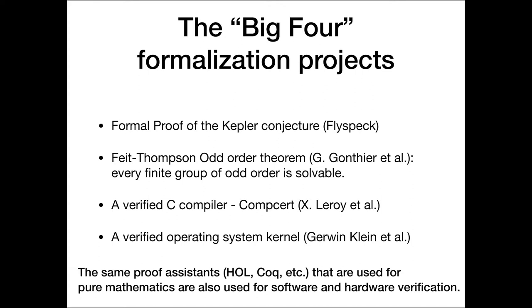There are four projects that I call the big four. One of them is the formal proof of the Kepler conjecture. Second is the Feit-Thompson odd order theorem that says every finite group of odd order is solvable. Or stated another way, if you have a finite simple group, it has an element of even order excluding the cyclic groups of prime order.